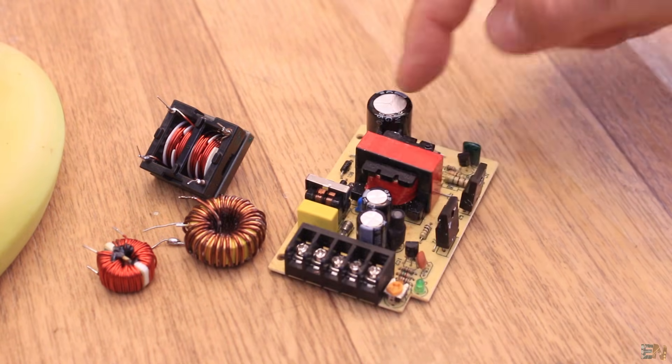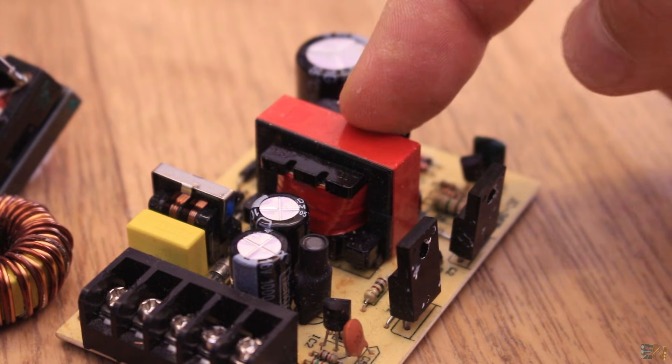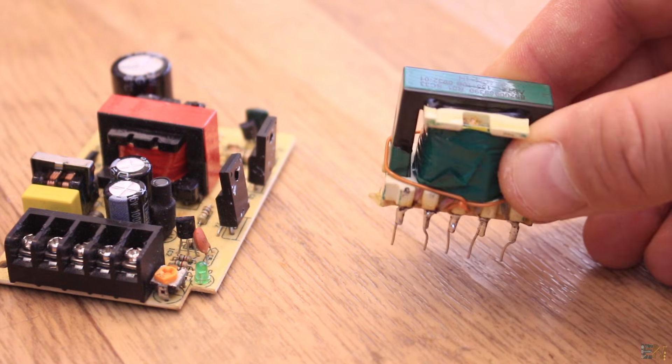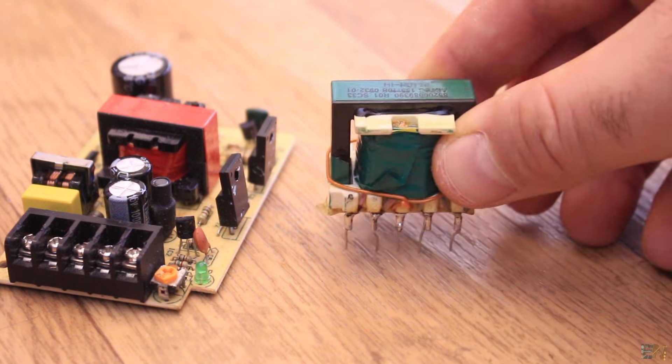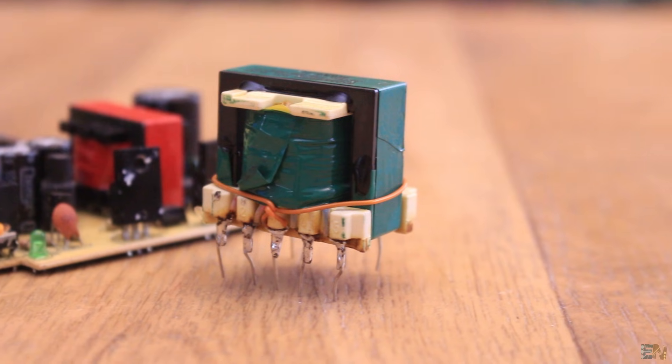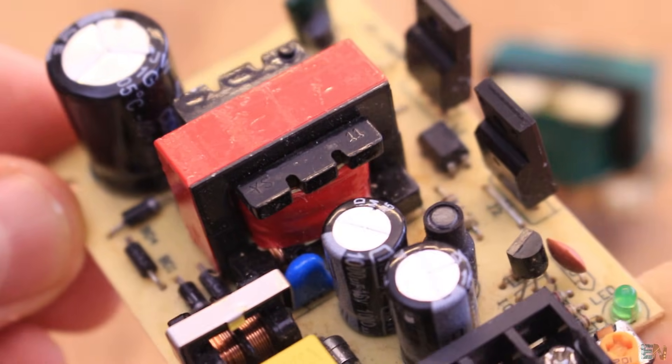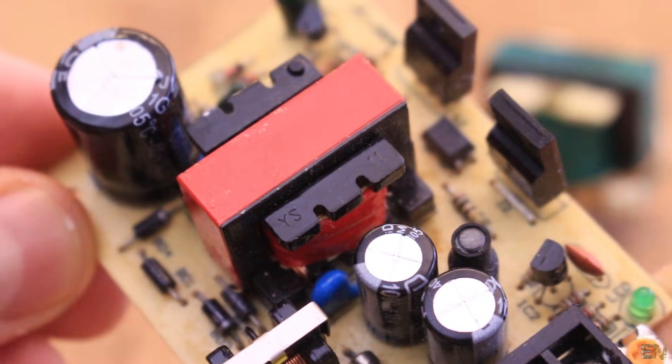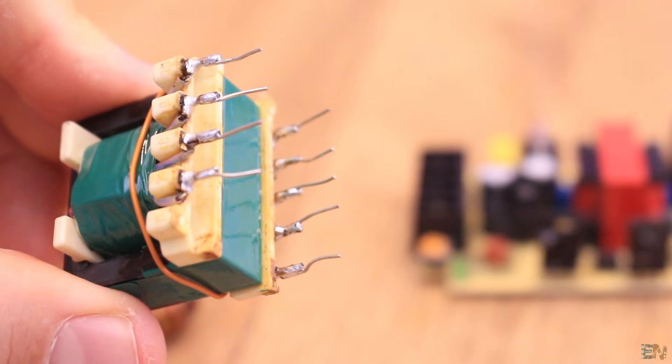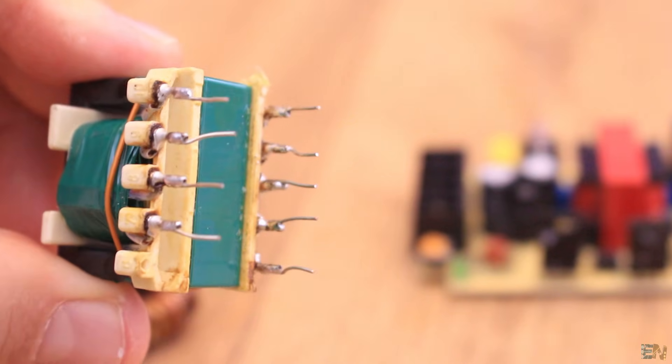If you ever opened a power supply of some sort, you might have seen this kind of component. This is a transformer used in a flyback configuration, sometimes called a coupled inductor. You'll notice the transformer doesn't have just one input and one output as common transformers do - it has a lot more pins and we will see why in this video.